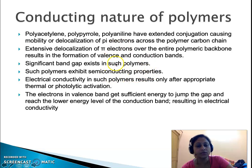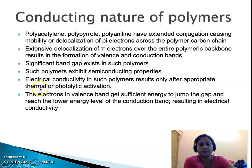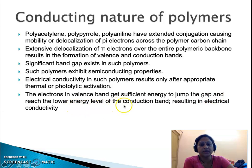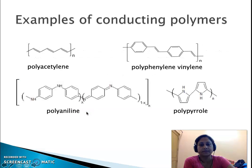Electrical conductivity in such polymers results only after appropriate application of heat or light. On application of heat or light, the electrons present in the valence band gain sufficient energy to jump the band gap and reach the lower energy levels of the conduction band, resulting in electrical conductivity. Examples of conducting polymers are polyacetylene, polyphenylene vinylene, polyaniline, and polypyrrole.